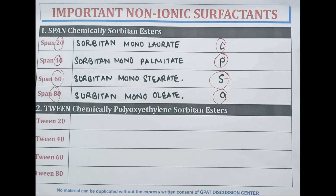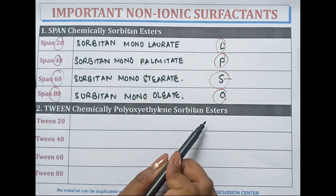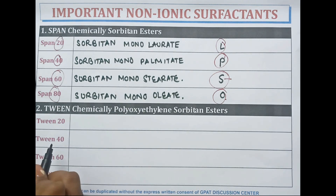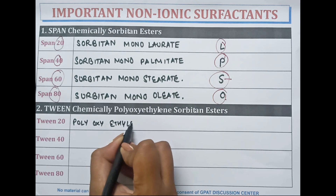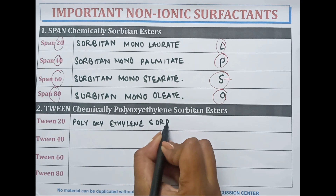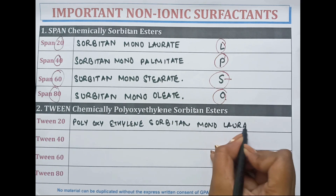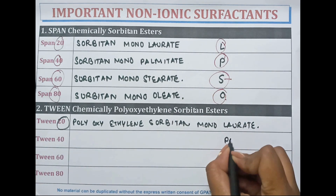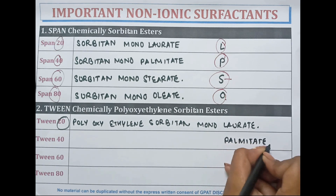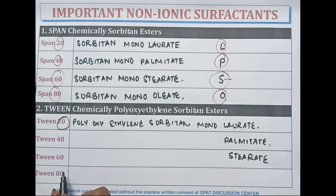Another example of non-ionic surfactants is Tween. Tween is chemically polyoxyethylene sorbitan esters. Tween 20 is polyoxyethylene sorbitan monolaurate. As with Span, 20 for laurate, 40 for palmitate.